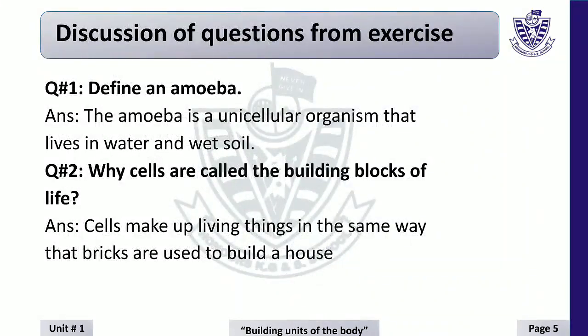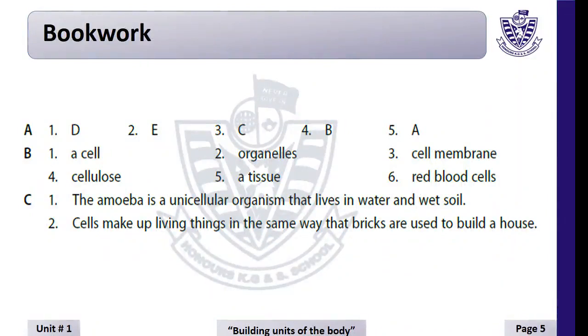Question and answer. According to your science book, question answers are on page number five. Question number one: Define an amoeba. The amoeba is a unicellular organism that lives in water and wet soil. Why are cells called the building blocks of life? Cells make up living things in the same way that bricks are used to build a house. Book work is on page number five — Part A: match the column, Part B: fill in the blanks, and then question answers.